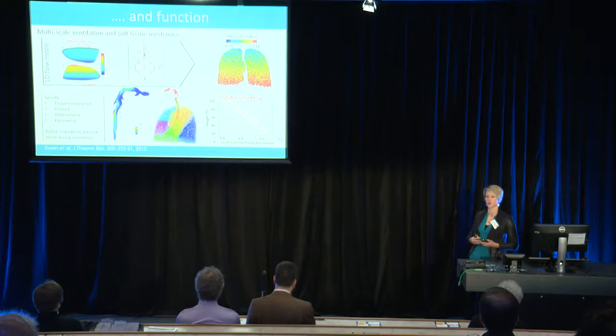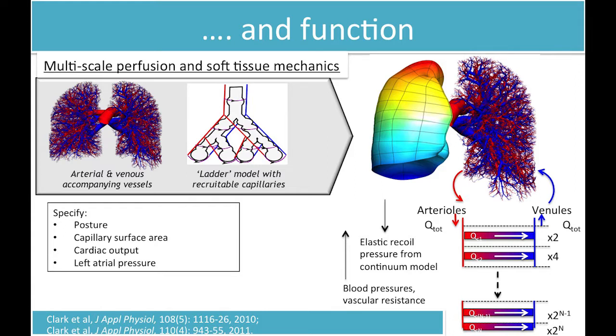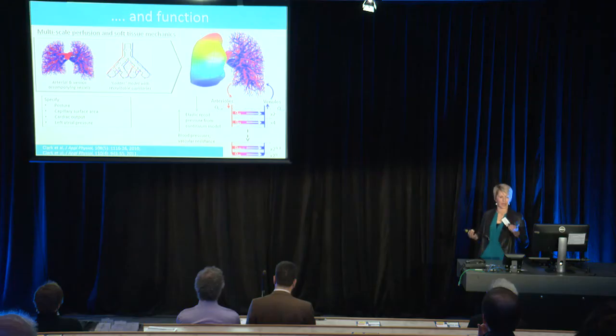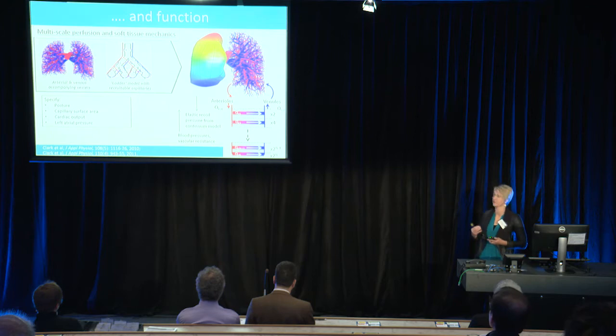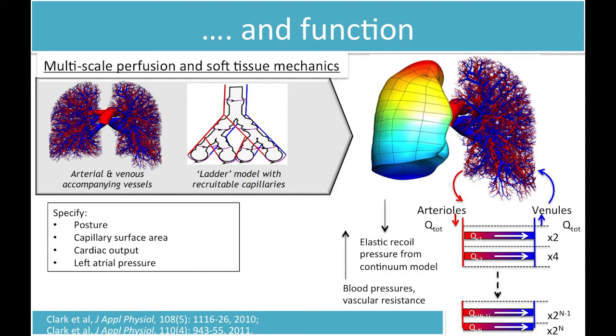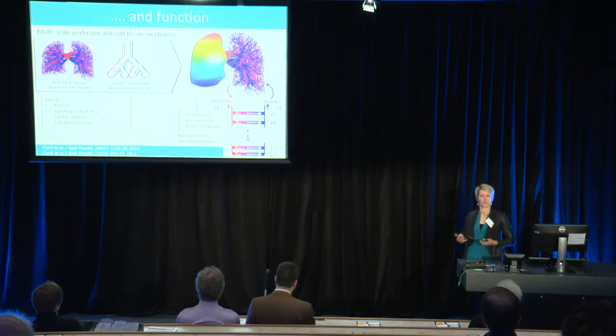We've developed models that go from the very complicated through to more simplistic methods we can use at the bedside — rapid methods to simulate ventilation distribution. Along with that, we also need to understand where the blood goes in the lungs, since you don't get gas exchange if you don't bring air into close contact with blood. We have developed one-of-a-kind models that simulate from the right ventricle through the entire pulmonary circulation, including the recruitable capillary beds, and back again to the left atrium. These models include all of the significant mechanisms that affect the characteristic distribution of blood in the lung — affected by gravity, by structure, and by the recruitment of these capillaries, since you don't always have blood flowing through all of your capillaries.